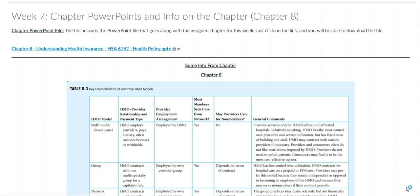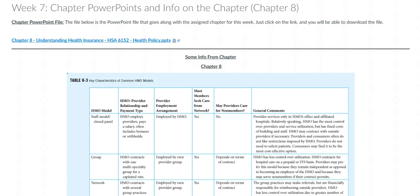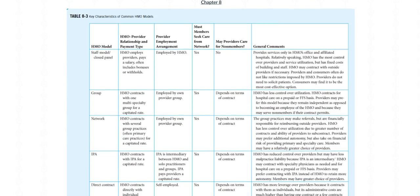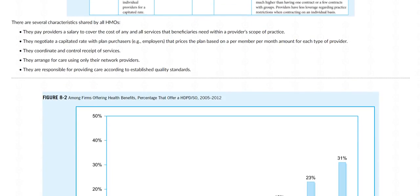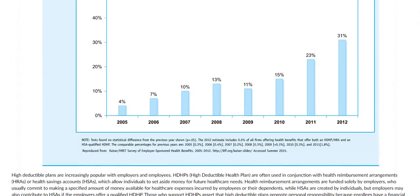The next content page provides some information on chapter 8. First is the PowerPoint presentation on Understanding Health Insurance, and below that is information from the chapter sections. As you can see, the first table provides an overview of some key characteristics of common HMO models.